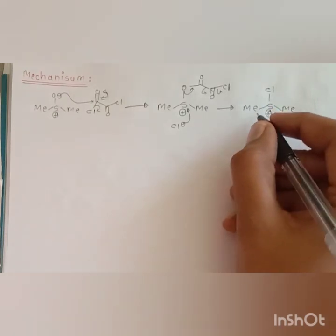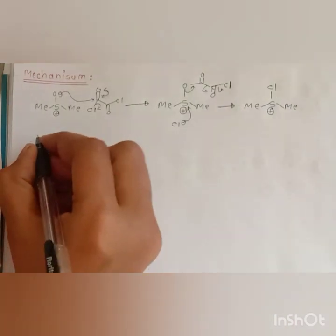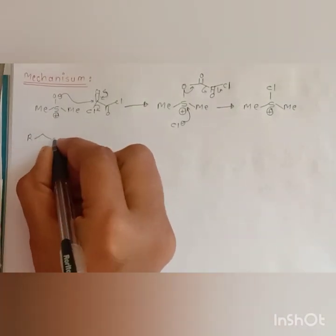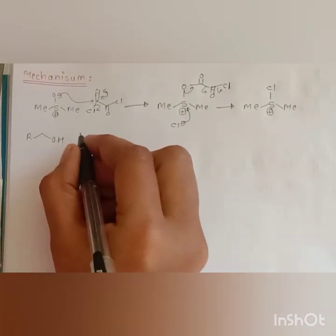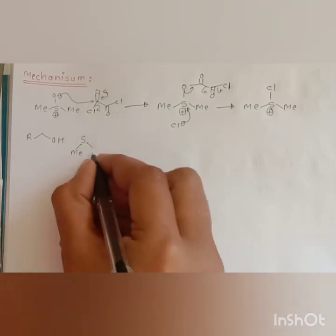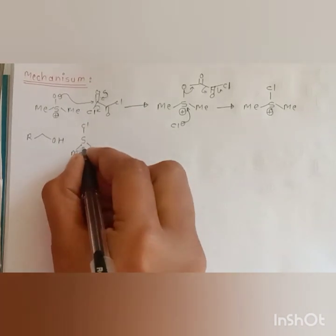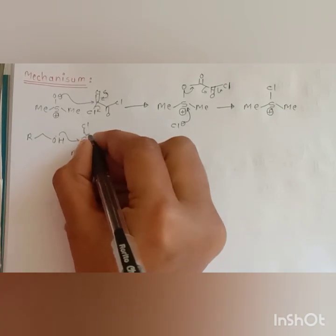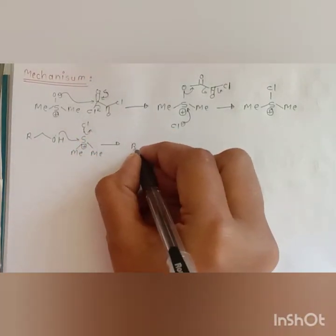Now in the next step, this nucleophilic alcohol attacks on this electrophilic sulfur and elimination of Cl minus takes place.